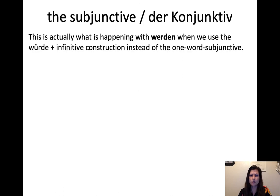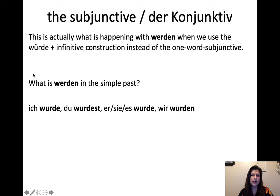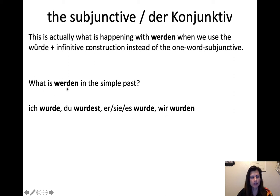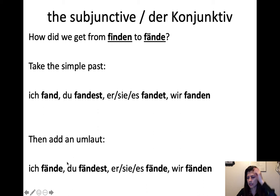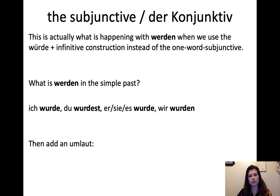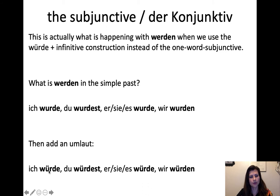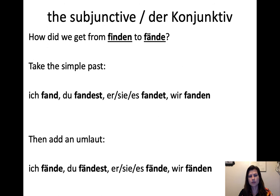This is actually what happens with werden when we use the würde plus infinitive construction. The simple past of werden is wurde — ich wurde means I became. We add the umlaut: wurde → würde. That's how we get würde. Both the one-word subjunctive (like fände) and the würde plus infinitive construction technically use the same technique — just with the verb itself, or with würde plus infinitive — and they end up meaning the same thing.